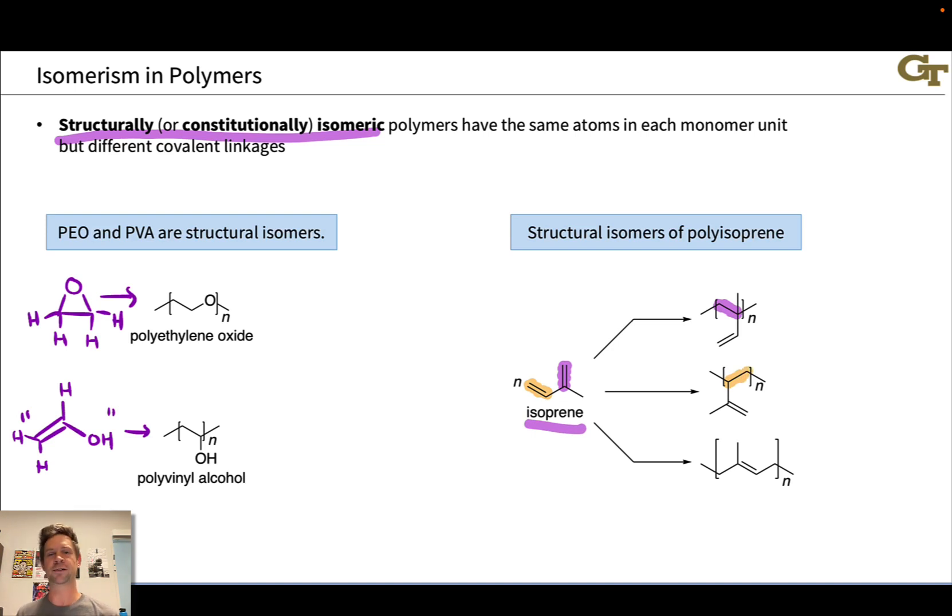On the other hand, we can imagine the less substituted double bond polymerizing. That's going to put the methyl group on a hanging side chain. We can also imagine one-four-type polymerization where both double bonds get involved in the polymerization. This is three different ways for the conjugated diene isoprene to polymerize, and they're all constitutionally isomeric. We're using the same monomer to polymerize, so the same atoms, numbers and types of atoms, are involved in all three polymers, but the way the atoms are linked to each other differs. These are structurally or constitutionally isomeric polymers of isoprene.